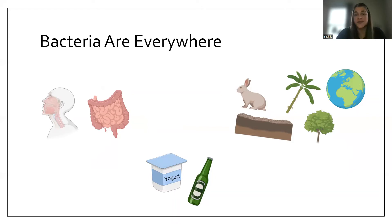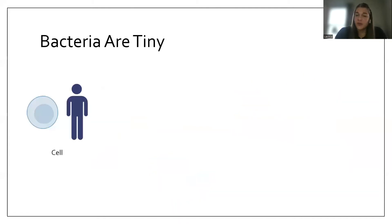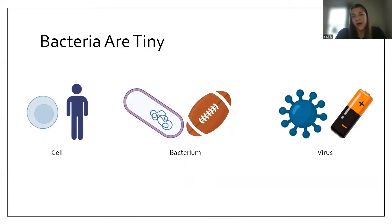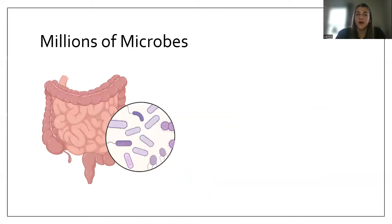Bacteria are super tiny. To get an understanding of just how small they are: if a human were the size of a human cell in the body, then an average bacterium would be the size of a football, and a virus would be the size of a AA battery. You have millions of these tiny bacteria that, along with some other types of microbes, make up something called the gut microbiome in your stomach.